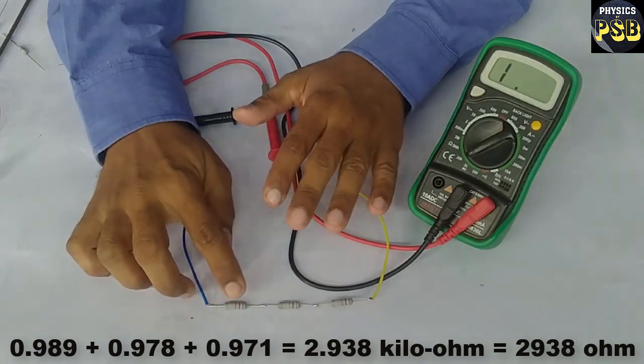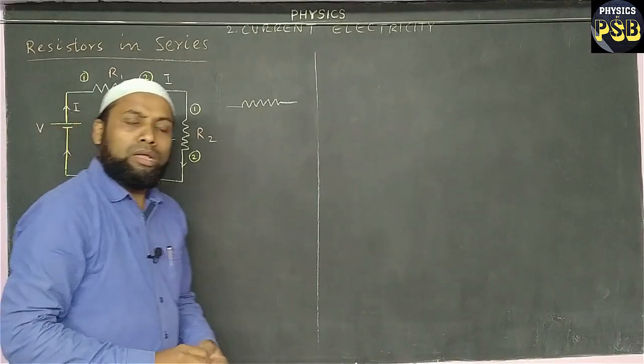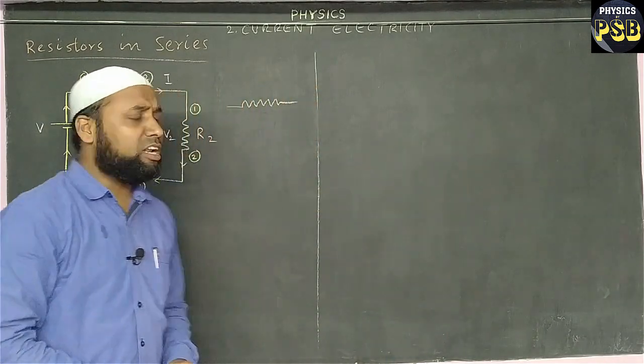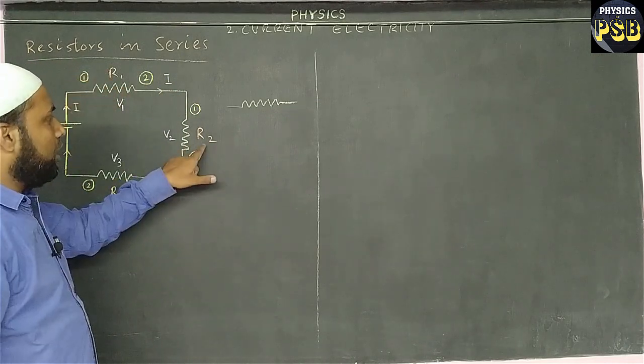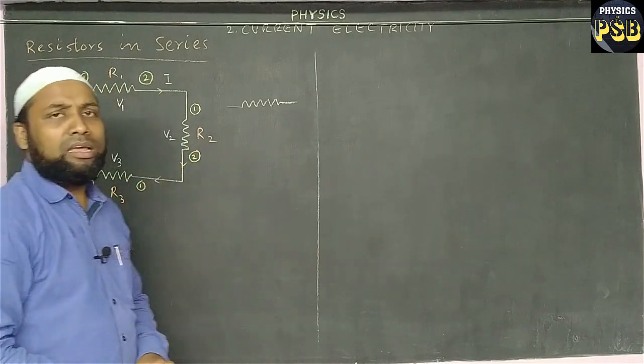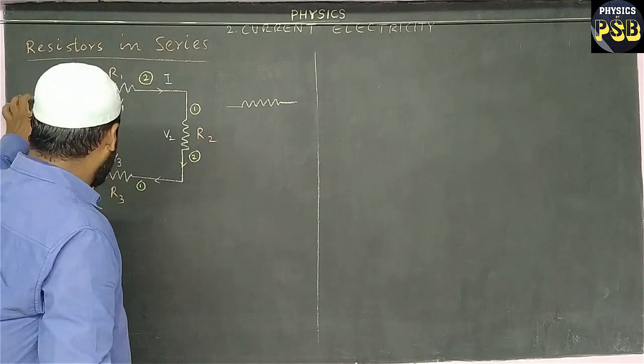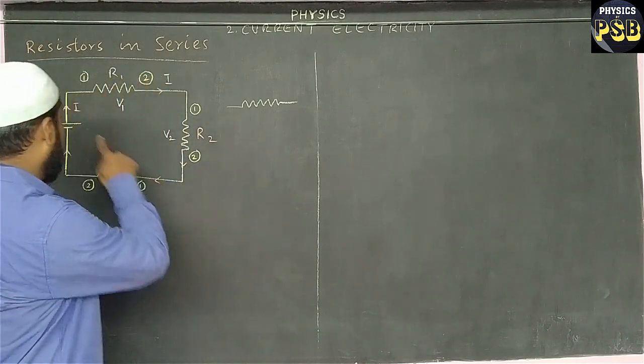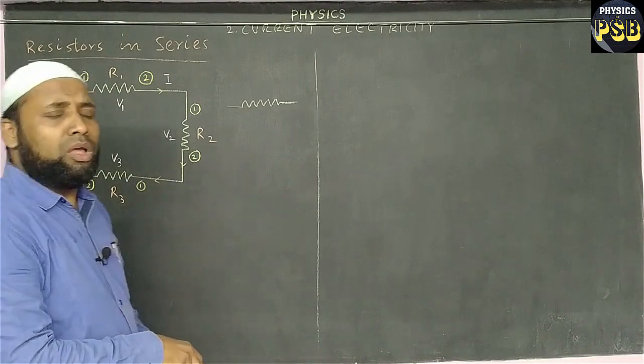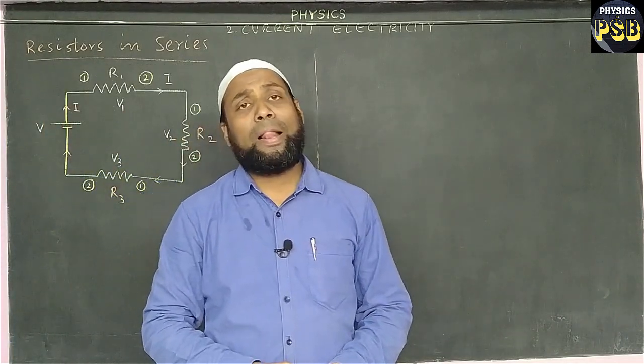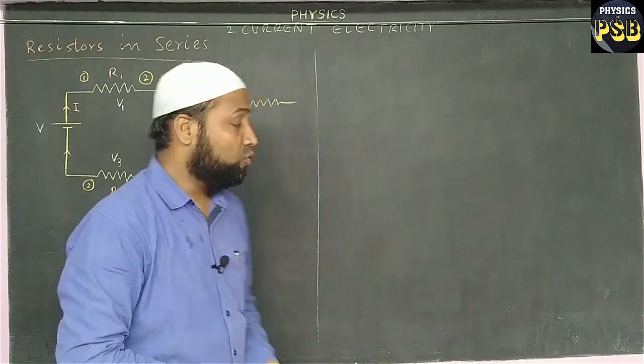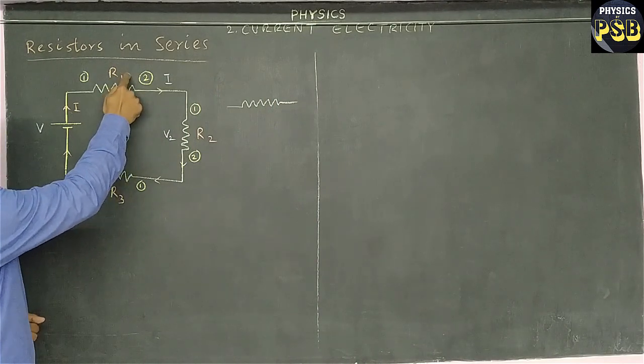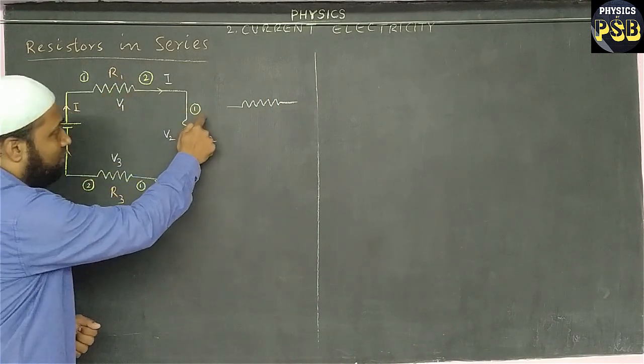A resistor is represented by this symbol. Here I consider three resistors R1, R2, and R3 connected in series to a cell which provides electric potential V, and because of which current I flows in the circuit. When we say series combination, it means we connect the second terminal of the first resistor to the first terminal of the second resistor.